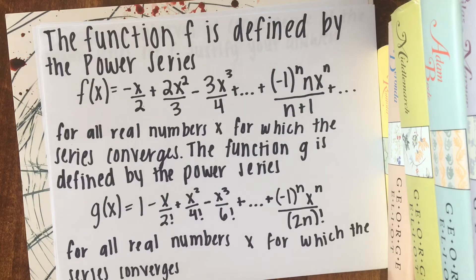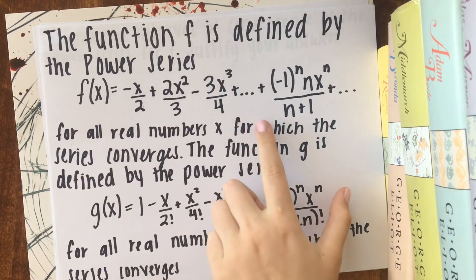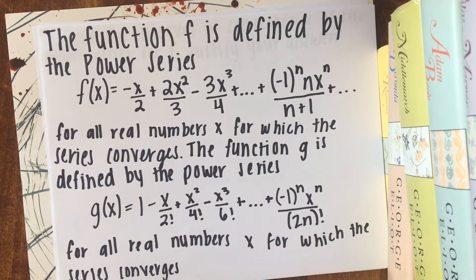So to start off, let's look at the information that they give us. They tell us that the function f is defined by the power series f of x equals this for all real numbers x for which the series converges.